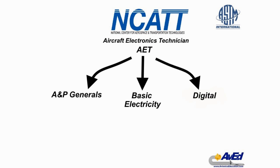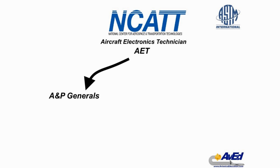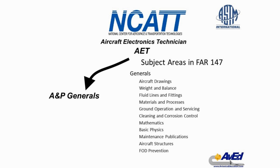The AET exam is divided into 34 subject areas, which can be further subdivided into three groups: A and P generals, basic electricity, and digital electronics. The A and P generals portion is where the writers wanted to ensure employers that all NCAT AET certified technicians had the same basic knowledge as any A and P mechanic. So the first third of the subjects were created directly from the FAR 147 general subjects.